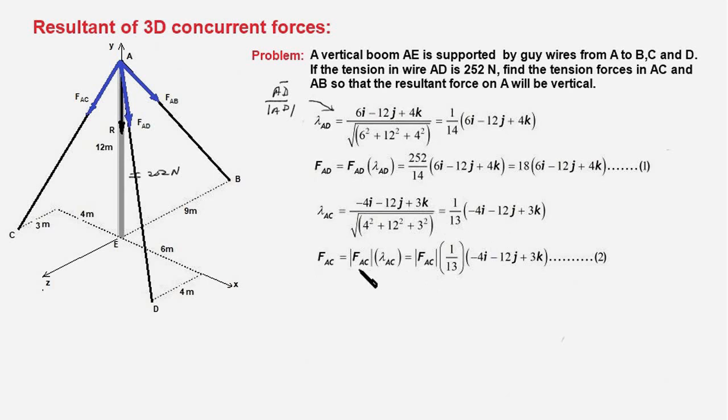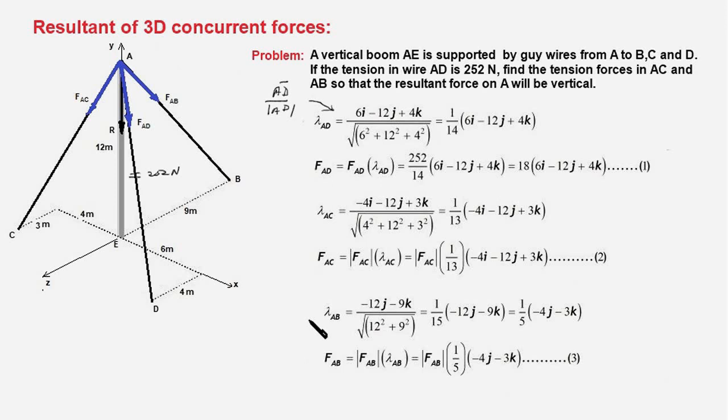Next we do a similar exercise for force F_AB and we write the unit vector lambda_AB along the line AB. And to figure out that, we walk from A to B. We go 12 units in minus Y direction and 9 units in minus Z direction, therefore we get minus 12j minus 9k.